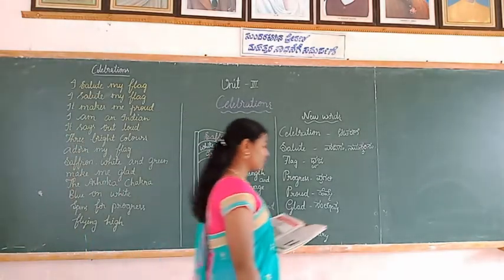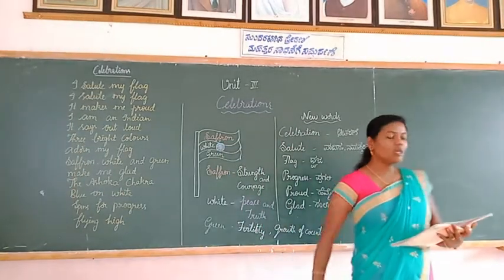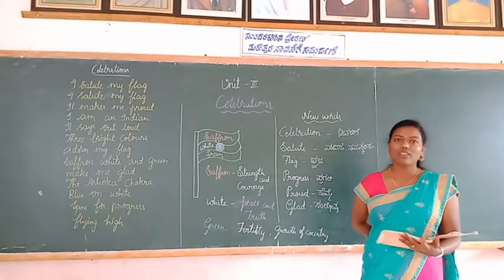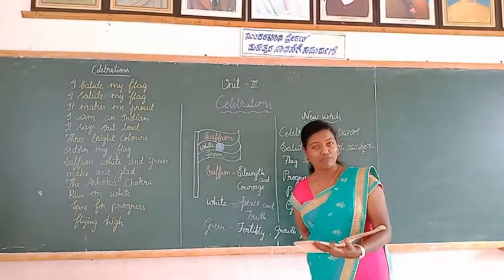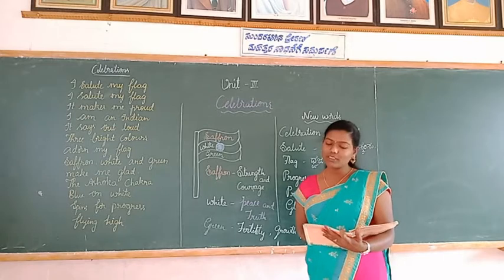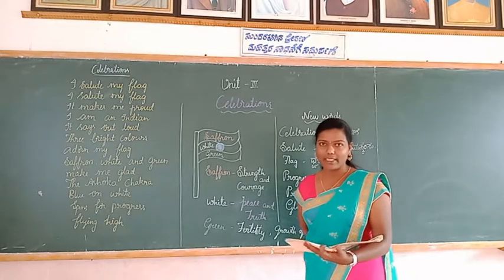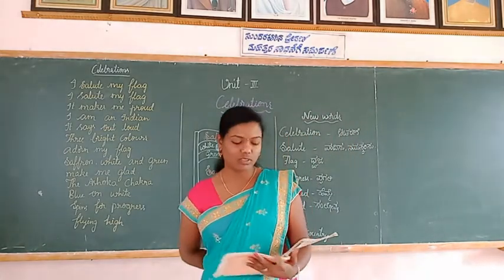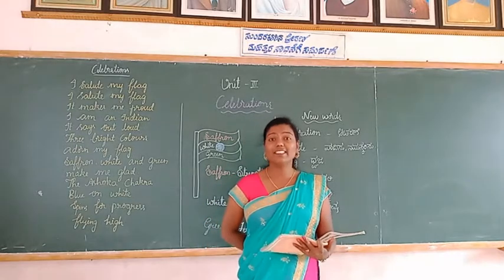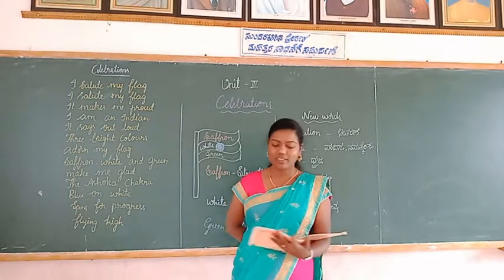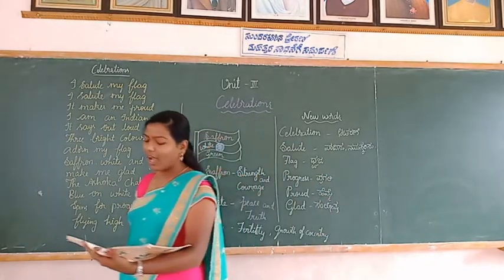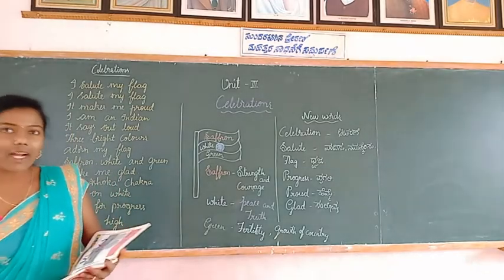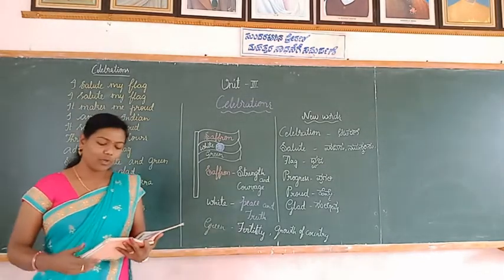Once again, you repeat after me. Proud, loud, cloud — these are rhyming words. All these words end with the same letters and the same sounds. Green, keen, seen. White, kite, sight. High, fly, sky. Glad, bad, pad — these are rhyming word groups.